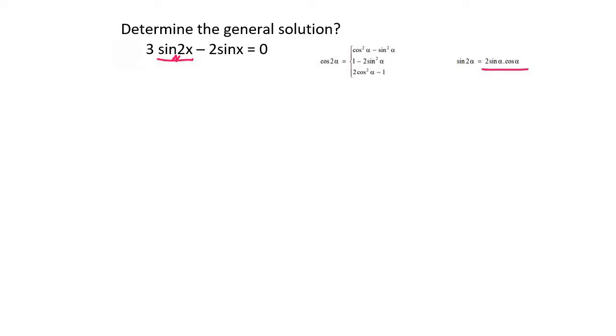So here I see it over here. What happens is that we've got the 3, then we can say bracket, and then we're going to change this, which is this one here, and we're going to change it into 2sinx cosx. Then here we've got minus 2sinx equals to 0.